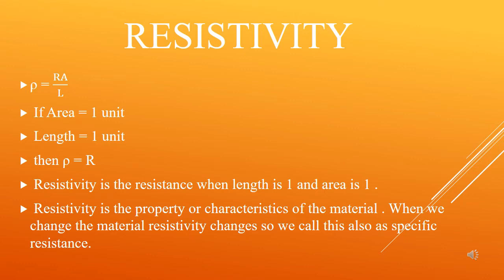So we also call resistivity specific resistance. When we use the word 'specific' in physics, it means any characteristic related to a unit — like specific gravity or specific heat. So both length and area are related to 1, making this a specific resistance. If length is 1 and area is 1, then the resistance is known as specific resistance. This is the property of different materials; for different materials this value will be different, so we call it resistivity or specific resistance of the material.